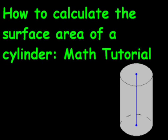Now, a cylinder has a radius and a height. The radius we're going to call R in green, and the height we're going to call H in yellow.